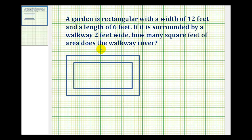Here's an application problem that deals with area and perimeter. A garden is rectangular with a width of 12 feet and a length of 6 feet. If it is surrounded by a walkway 2 feet wide, how many square feet of area does the walkway cover?